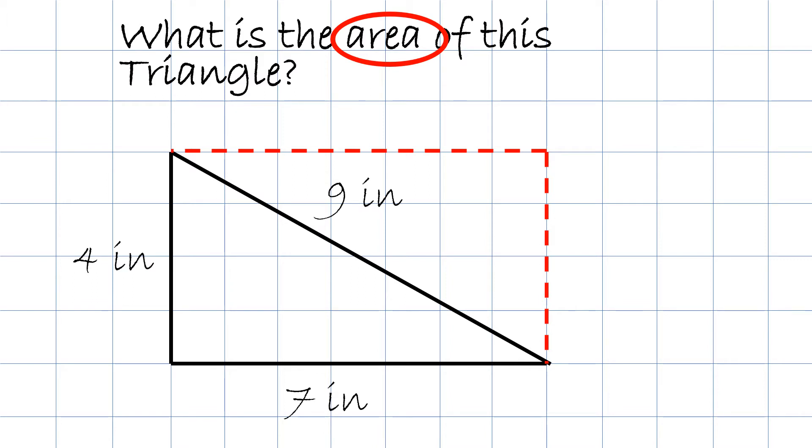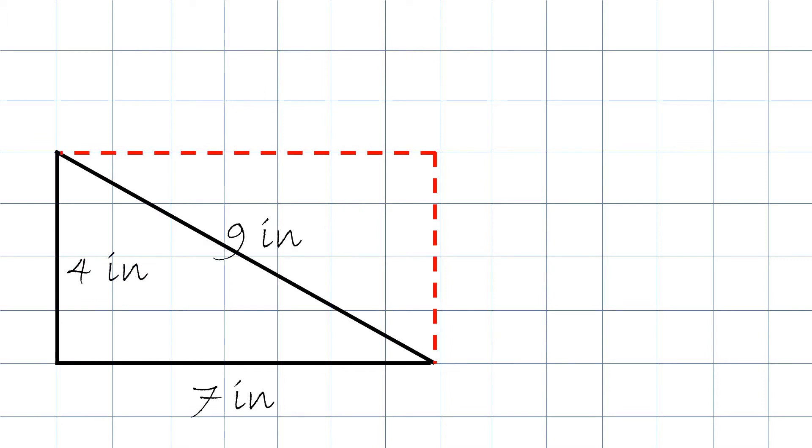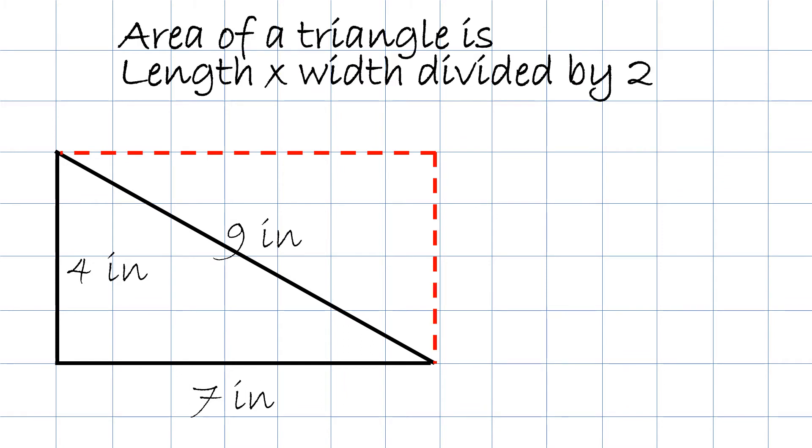So what does that mean? What it means for us is that the area of a triangle is length times width divided by 2. So find the area of a rectangle and divide it by 2 and you will get the area of a triangle.